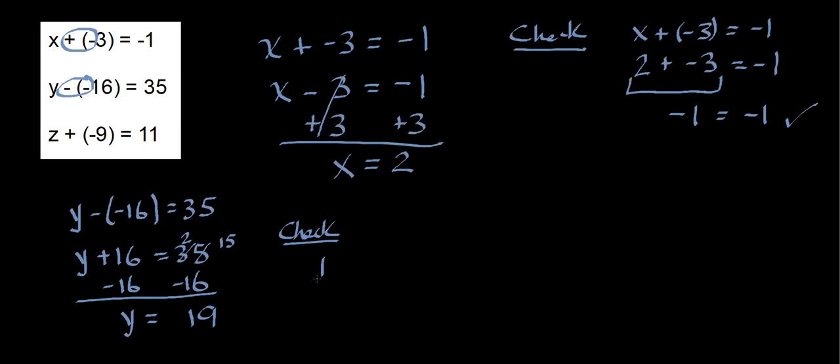Let's do my check. So I have y minus negative 16 equals 35. I'm going to substitute in 19 in place of y. And I'm going to rewrite this. Subtracting a negative is the same as adding a positive. So I have 19 plus 16.